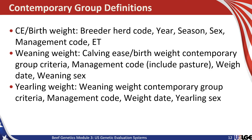Yearling weight, another commonly reported phenotype, uses weaning weight contemporary group — which is a subset of the birth contemporary groups and management codes — and adds a yearling management code, a yearling weight date, and yearling gender, again defining situations where animals have been given an equal opportunity to perform. An example of breaking yearling contemporary groups might be a condition where animals are being developed for a bull sale, but a subset of animals are segregated and hand-fed for an exposition. Those animals experienced a different environment than the main group of bulls being developed for the bull sale, and as such they should be forced into separate contemporary groups by management code.